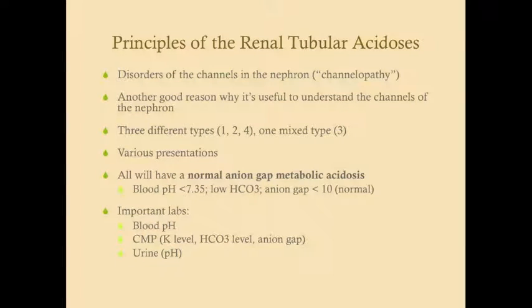This is a quick talk on the three different renal tubular acidoses that are tested on the USMLE. Some principles they share in common: they are all disorders or dysfunctions of the channels of the nephron — what cell biology calls a channelopathy. This is a good reason why it's useful to understand the different channels of the nephron and how they work. There are three types: one, two, and four. Type three is a mixed type, very difficult to diagnose, and generally USMLE Step 2 and 3 do not test type 3 RTA.